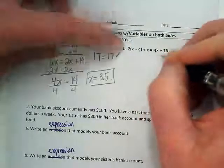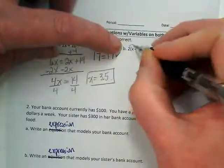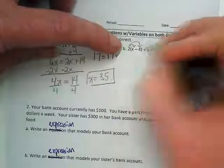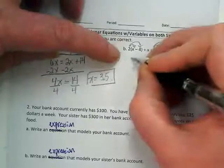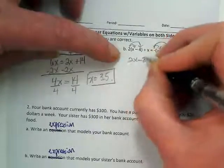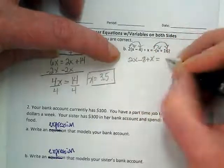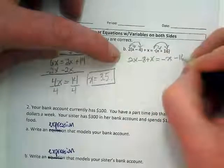I'm going to start off by distributing this term here and this term here. There's a negative 1 there. So this is 2x minus 8 plus x equals negative x minus 16.